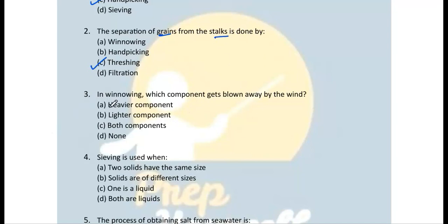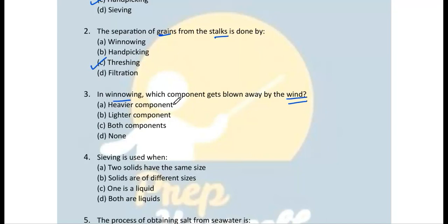Question 3: In winnowing, which component gets blown away by the wind? The process of winnowing involves a bamboo tray, also called a soup. There is a solid-solid mixture — one is a heavier component and the other is a lighter component. With the help of wind, the lighter component gets blown away, and we are left with the heavier component. So the correct answer is: the lighter component.